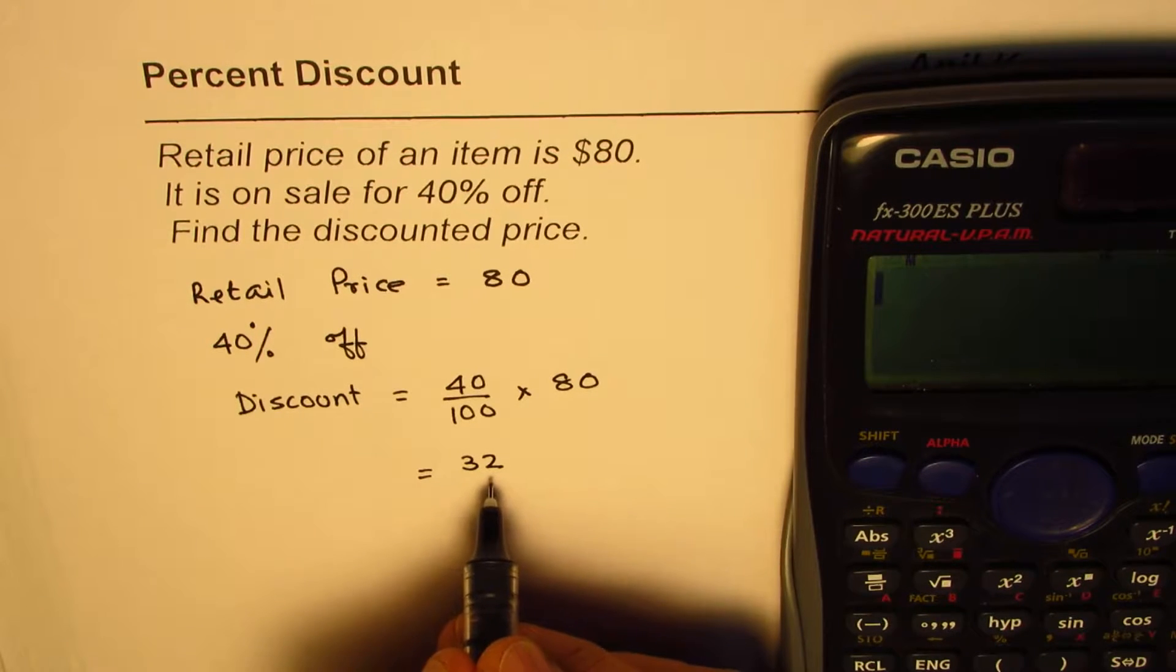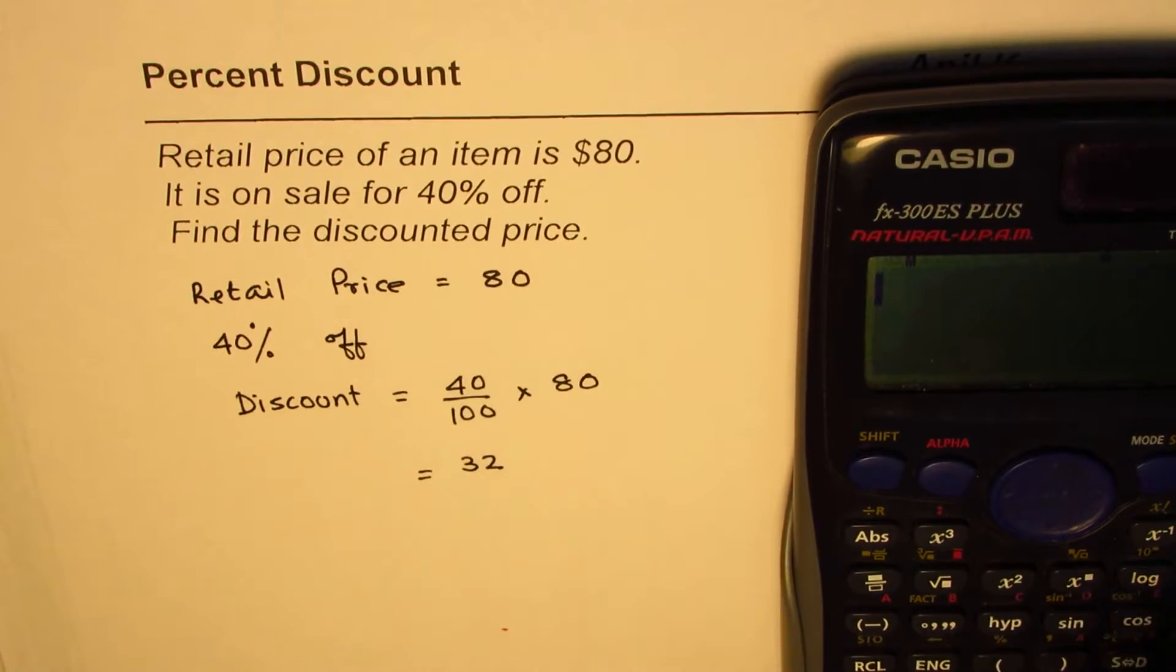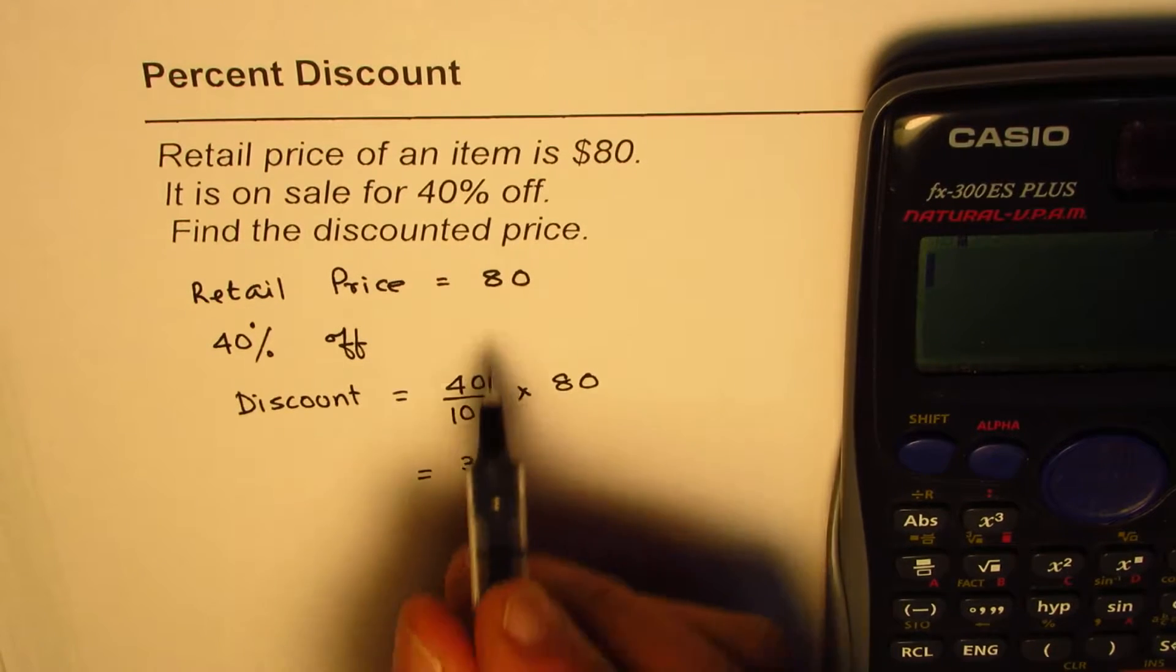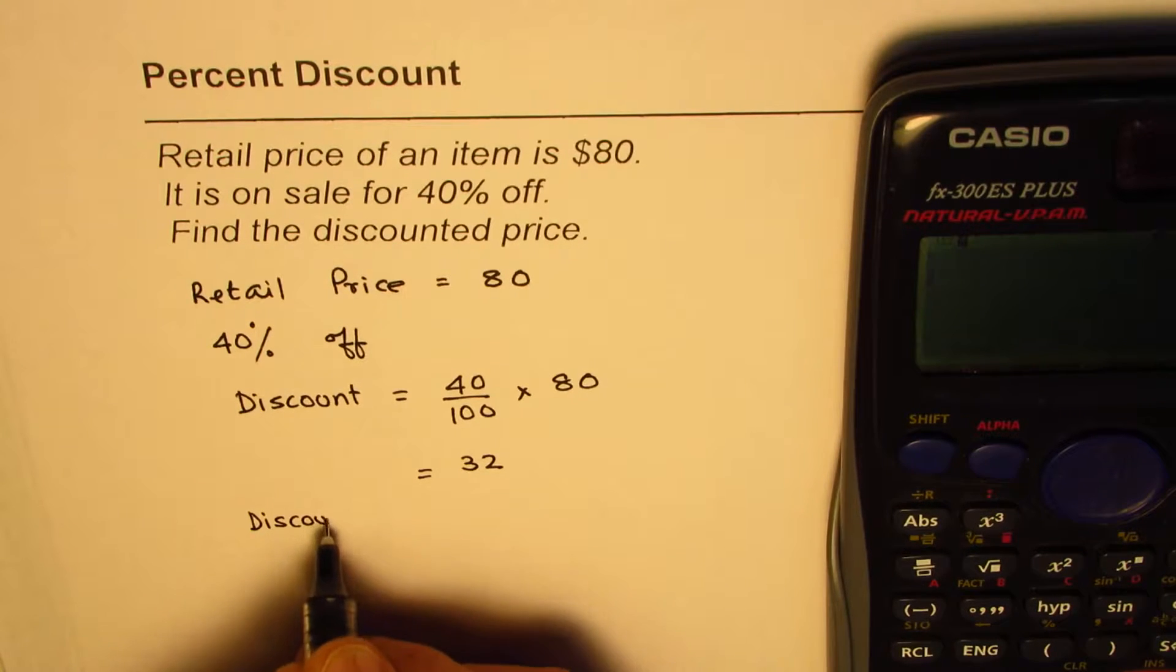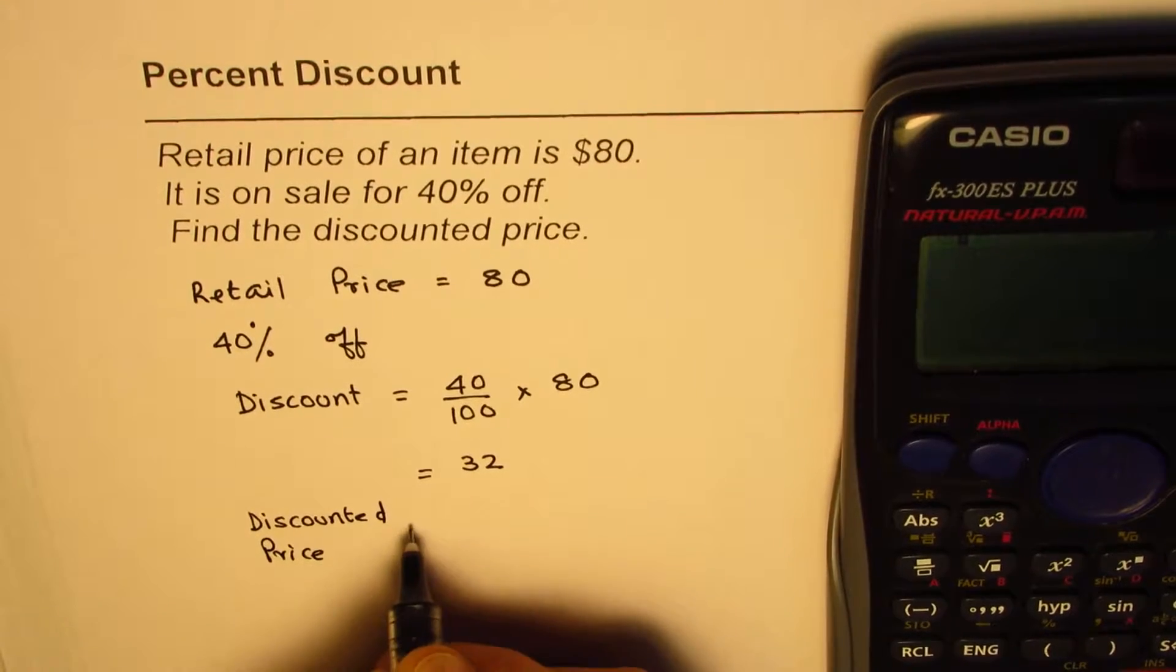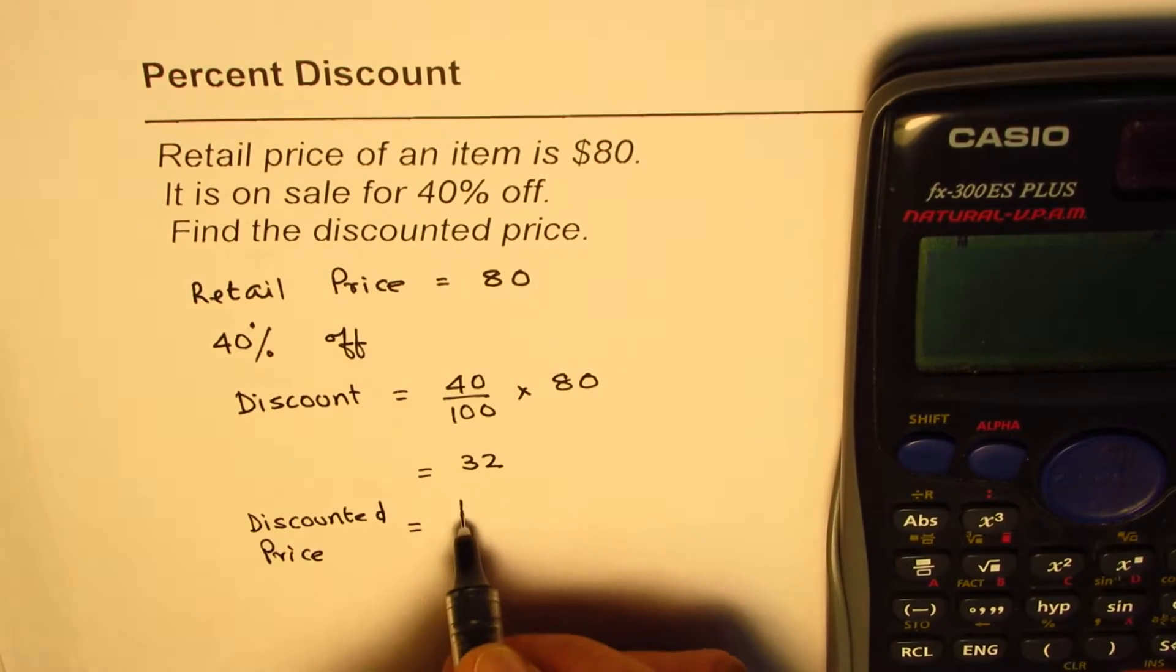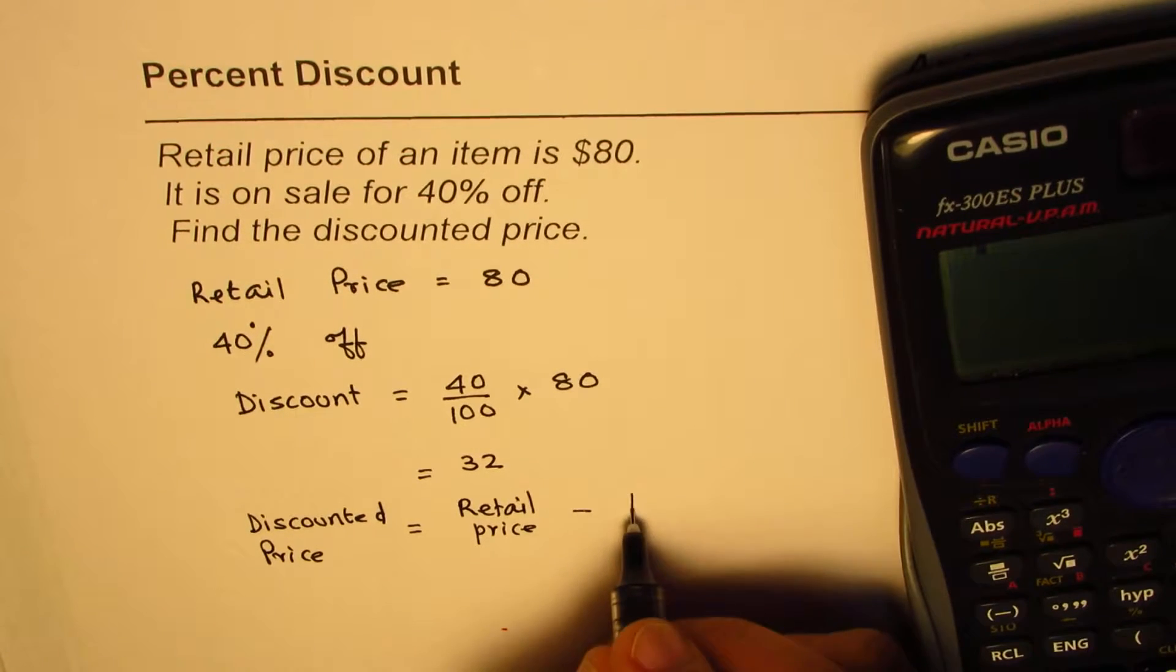So we have a discount of $32. You have to find the discounted price. Discount is that much less from the retail price. So discounted price equals retail price take away discount.